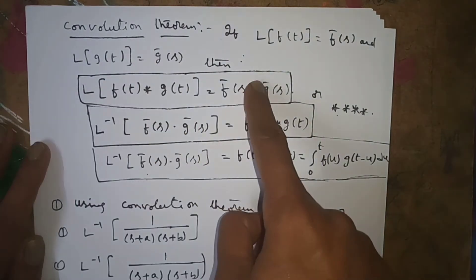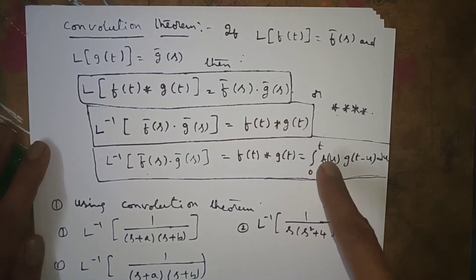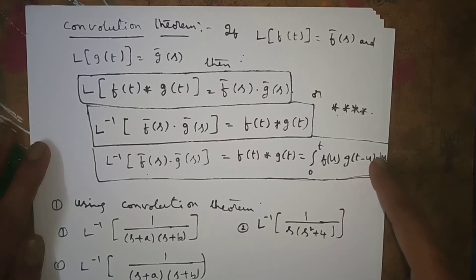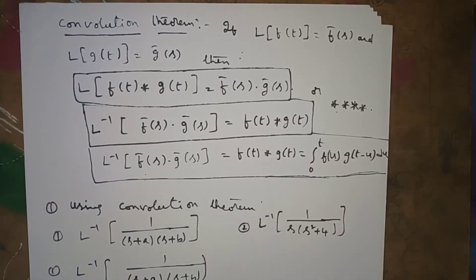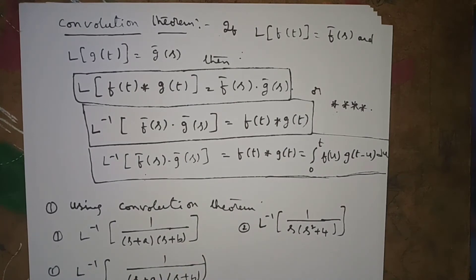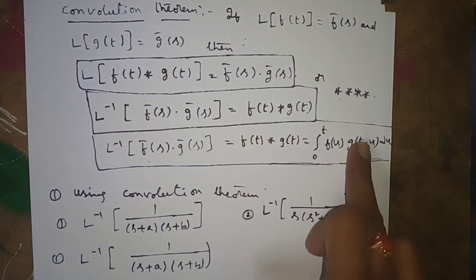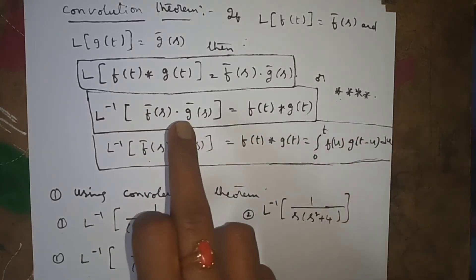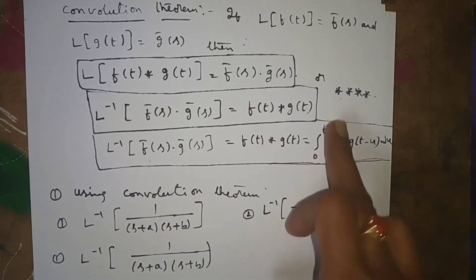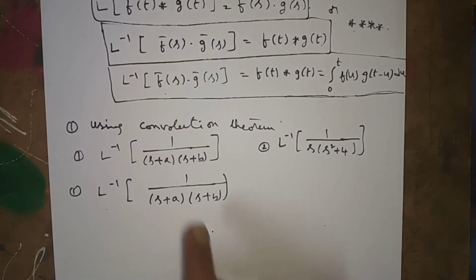This is the statement of the Convolution Theorem: L inverse of f-bar(s) into g-bar(s) equals f(t) star g(t), which equals the integral from 0 to t of f(u) into g(t minus u) du. Whenever a product of two terms occurs inside an L inverse, you have to apply the convolution theorem. Remember this formula carefully.